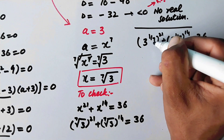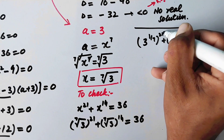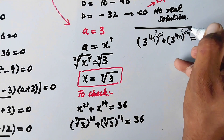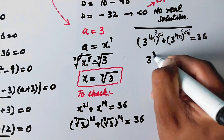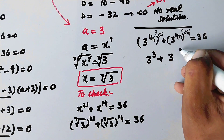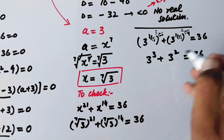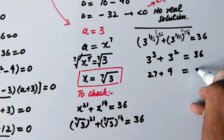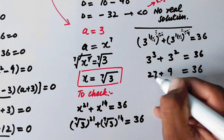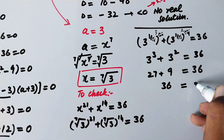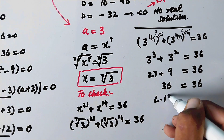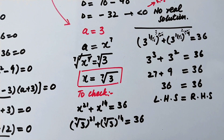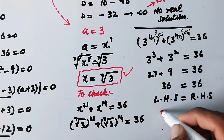So we have 3 to the power (1/7) whole power 21, plus 3 to the power (1/7) whole power 14, equal to 36. Dividing 21 by 7 gives 3, and dividing 14 by 7 gives 2. So we get 3 to the power 3 plus 3 to the power 2 equal to 36, which is 27 plus 9 equal to 36. The left-hand side equals the right-hand side, hence it is proved that this value of x is the correct answer.